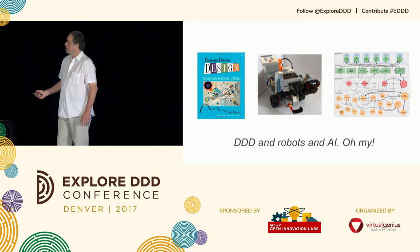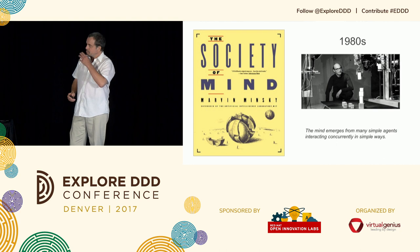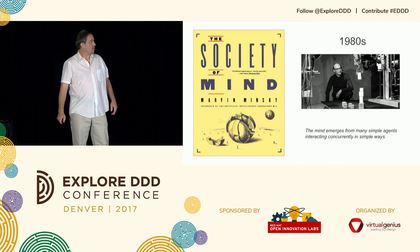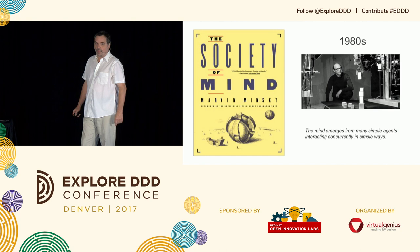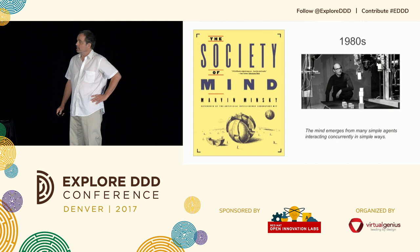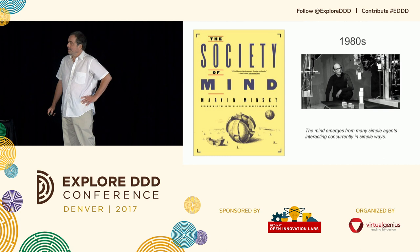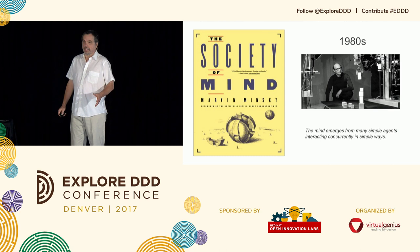Fast-forwarding to the 1980s: I'm doing a computer science degree with a concentration in artificial intelligence. I'm exposed to a book called The Society of Mind by Marvin Minsky, which I found very striking. It tries to explain the mind as an emergence from many simple agents interacting concurrently in simple ways. I don't remember much else from that book, but that struck me as rather interesting.